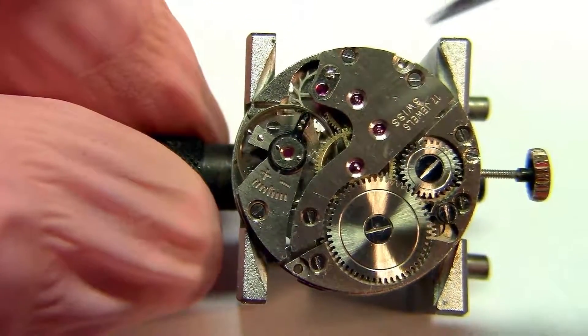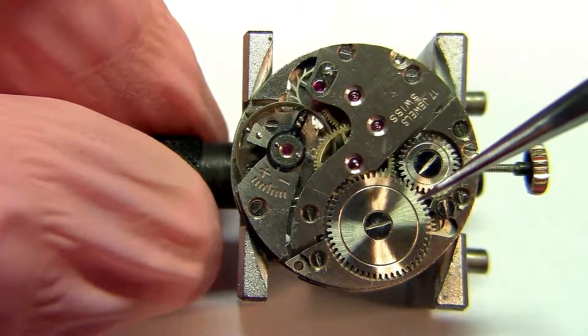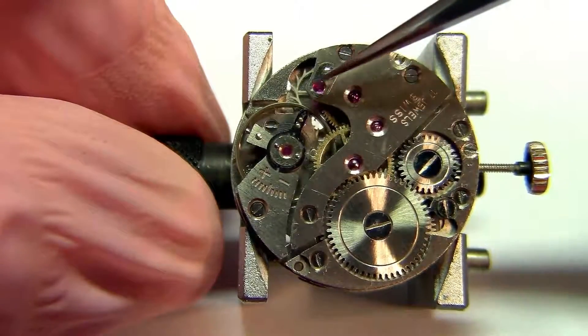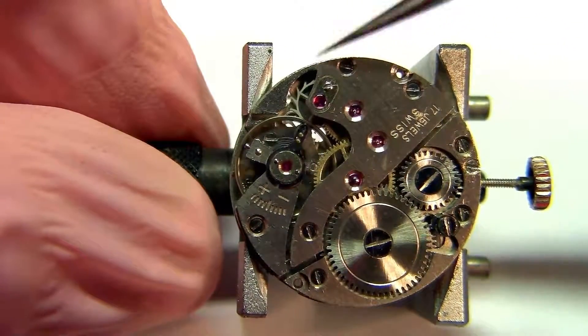So visually we can see the ratchet, the transmission wheel, the balance wheel, and the escape wheel.